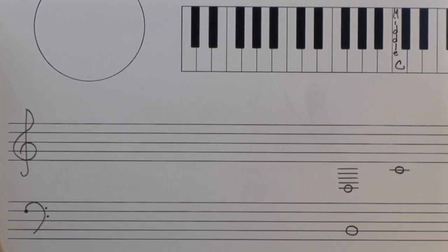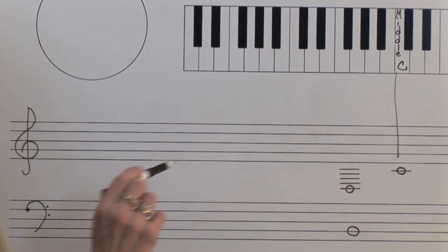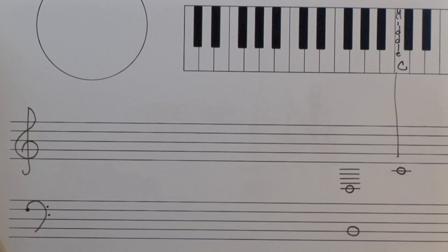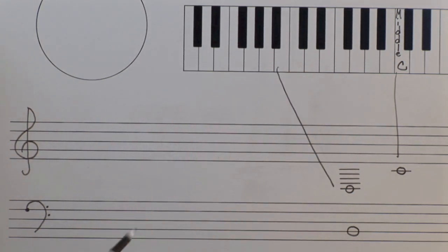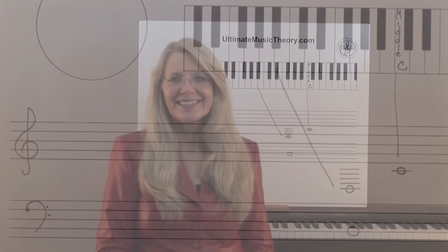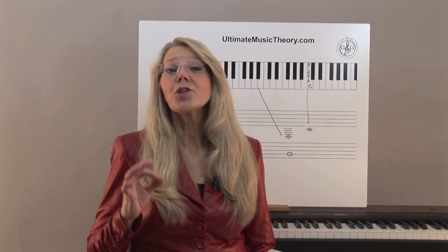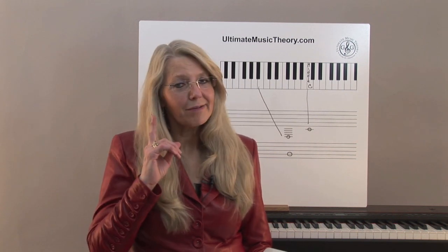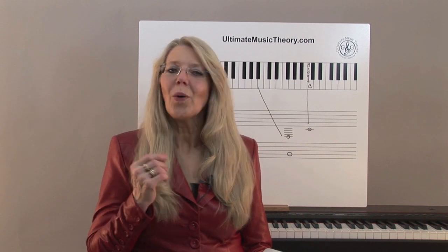The shortcut to identifying ledger line notes between the treble clef and the bass clef is to find middle C first, then go up or down to identify the note name. As we can see, this B is one octave lower below middle C. When we teach music theory, we are teaching our students to read the language of music and transfer that to sound at the correct pitch — teaching them to hear what they see.